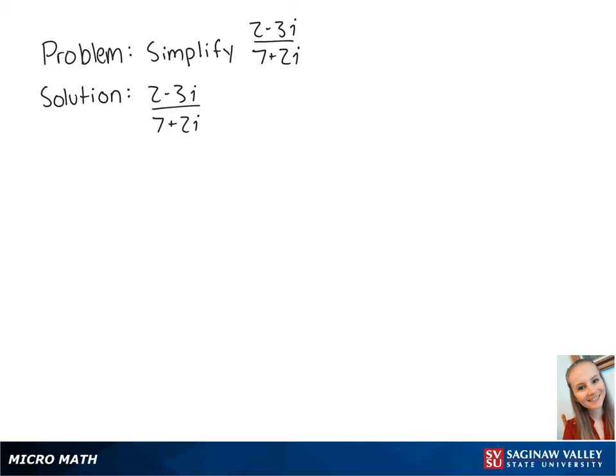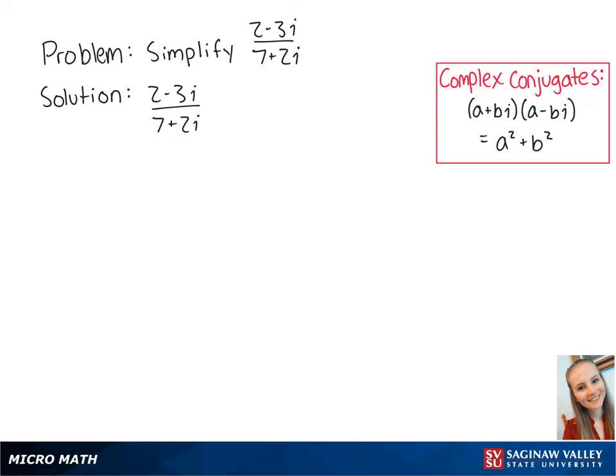For this problem, we want to simplify the quotient 2 minus 3i over 7 plus 2i. First, we want to multiply the numerator and the denominator by the denominator's conjugate. So we're going to multiply by 7 minus 2i over 7 minus 2i,